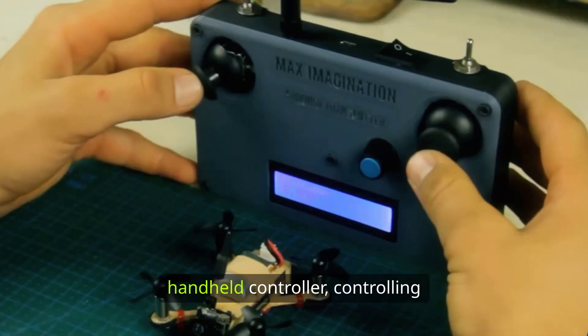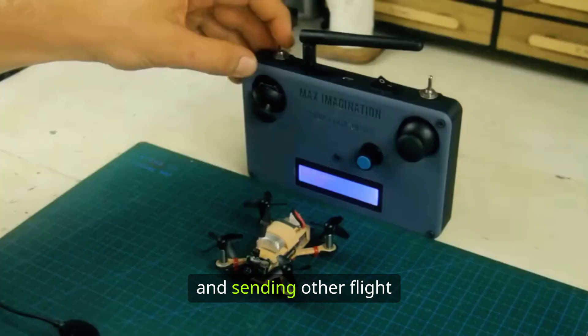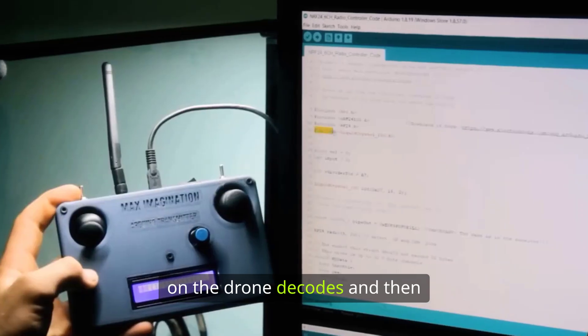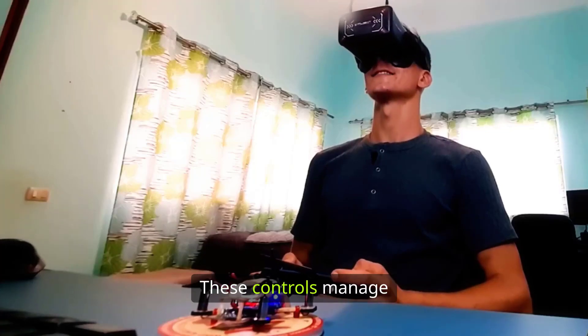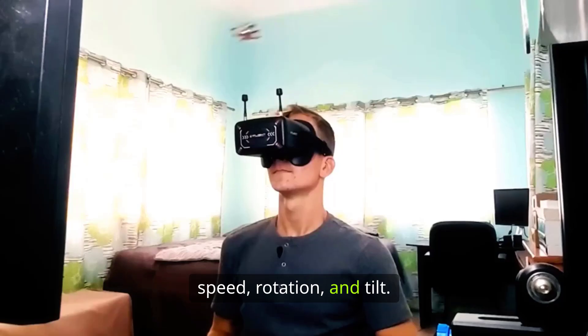combined with a receiver mounted on the drone. The transmitter is your handheld controller, controlling throttle, steering and sending other flight commands. The receiver on the drone decodes and then transmits those commands to the flight controller. These controls manage the drone's altitude, speed, rotation and tilt.